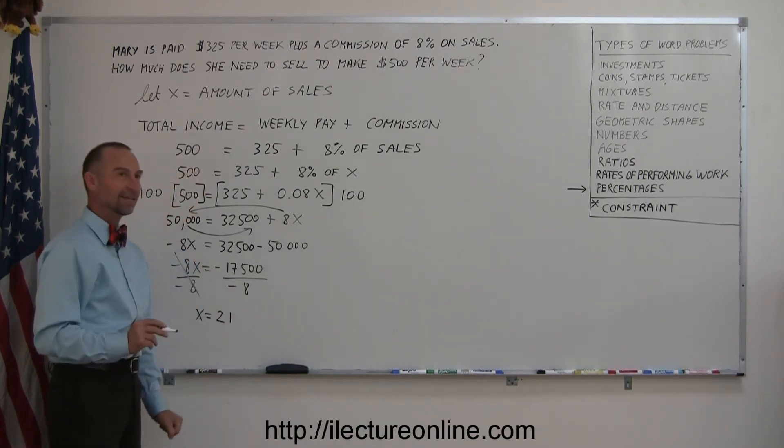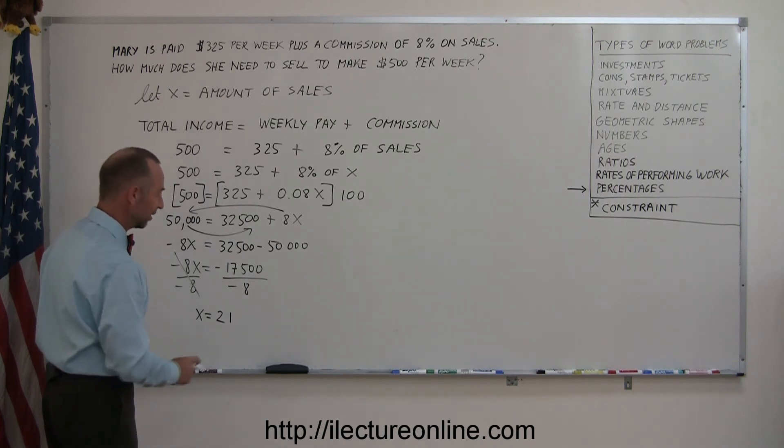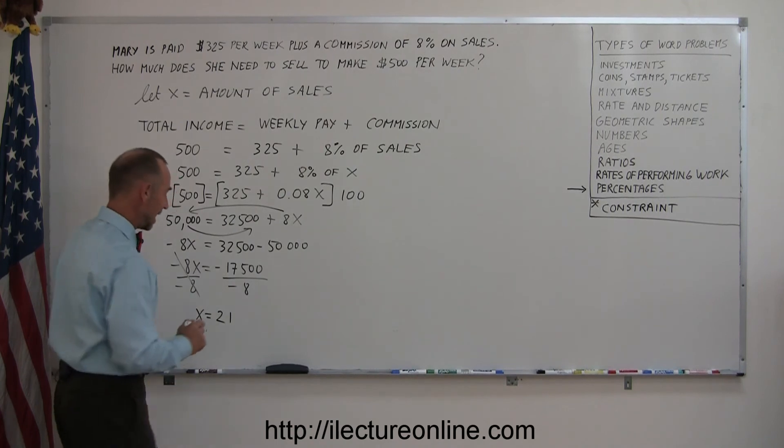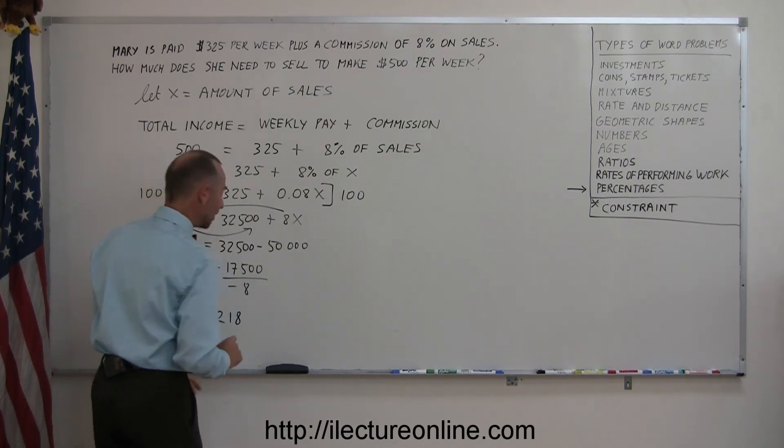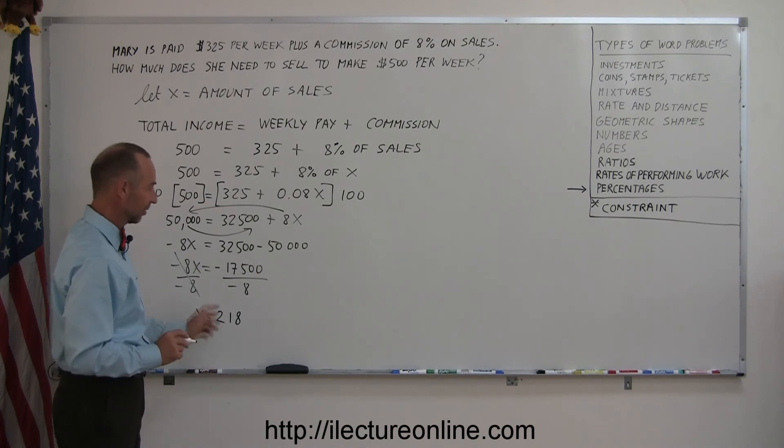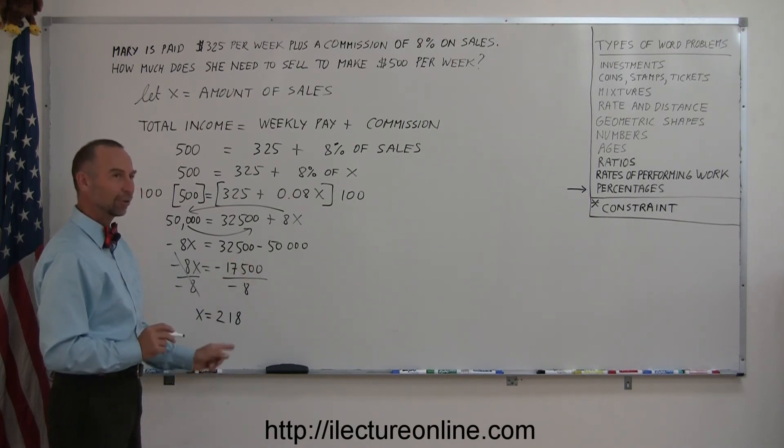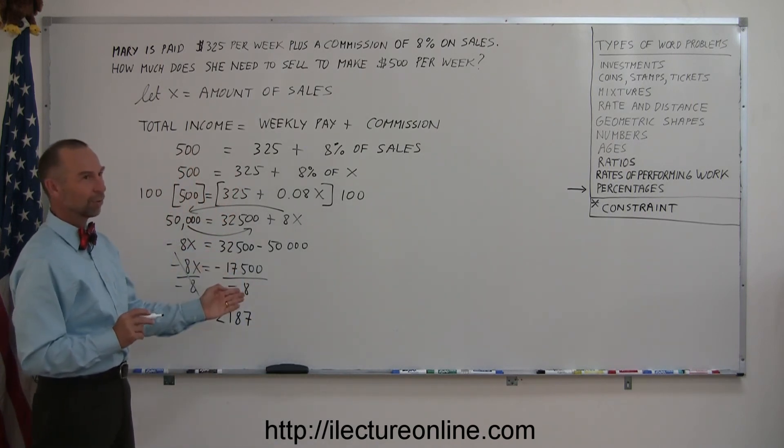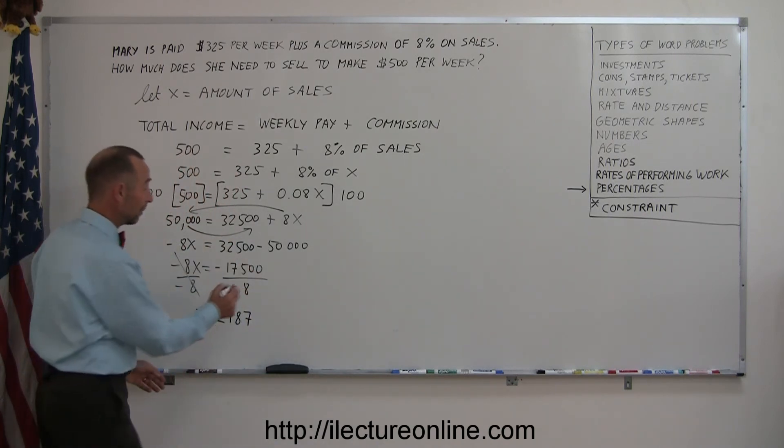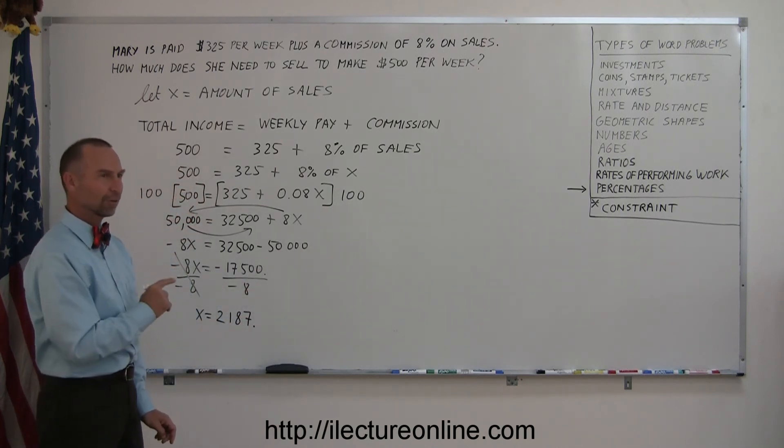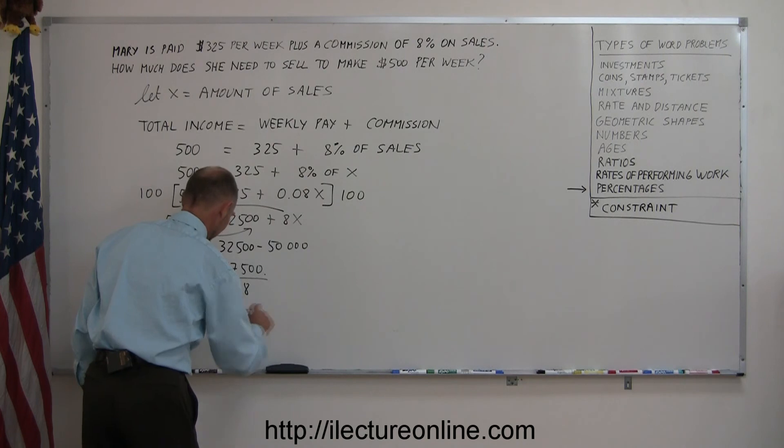1 times 8 is 8. 8 subtracting from 15 is 7. Drop down the next number, that's a 0. 8 goes into 70 8 times. 8 times 8 is 64. 64 subtracting from 70 is 6. Drop down to 0. 8 goes into 60 7 times. 7 times 8 is 56. That leaves me a remainder 4. Drop down the next 0. But now we're past this point right here, so we need to put the decimal in place. 40. 8 goes into 40 5 times. And x equals that.